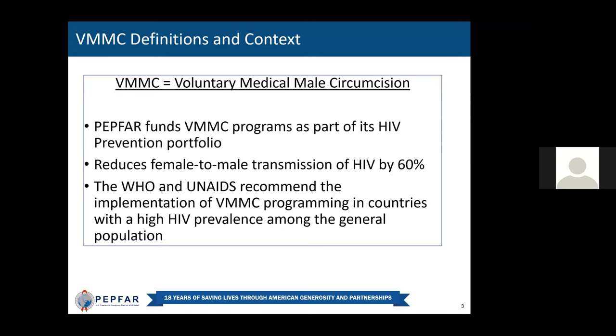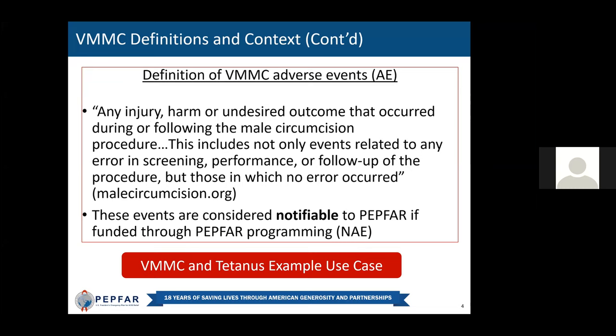As such, partners involved in PEPFAR VMMC programming should identify and report any adverse events. A VMMC adverse event is defined as any injury, harm, or undesired outcome that occurred during or following the male circumcision procedure, including events related to any error in screening, performance, or follow-up, as well as those where no error occurred. These events are considered notifiable to PEPFAR if funded through their programming.